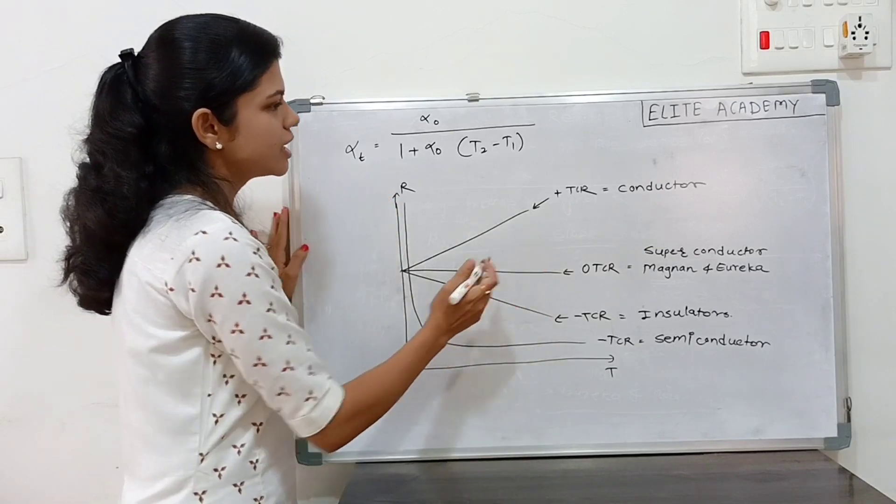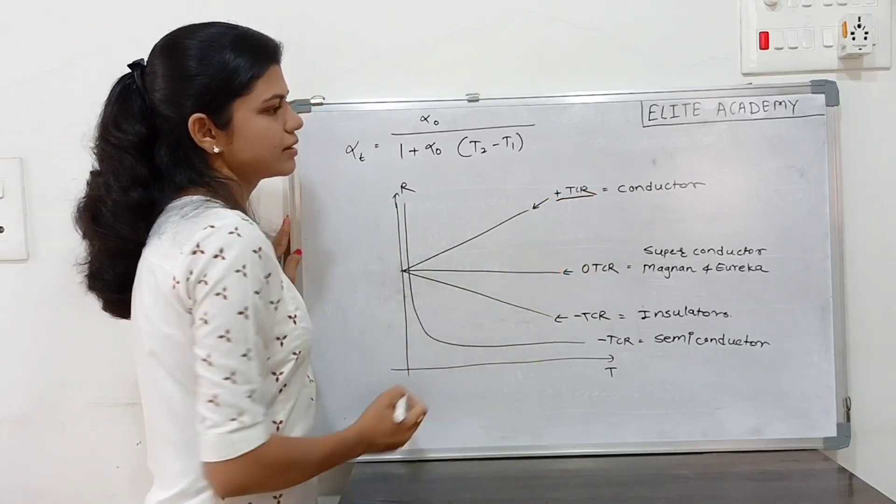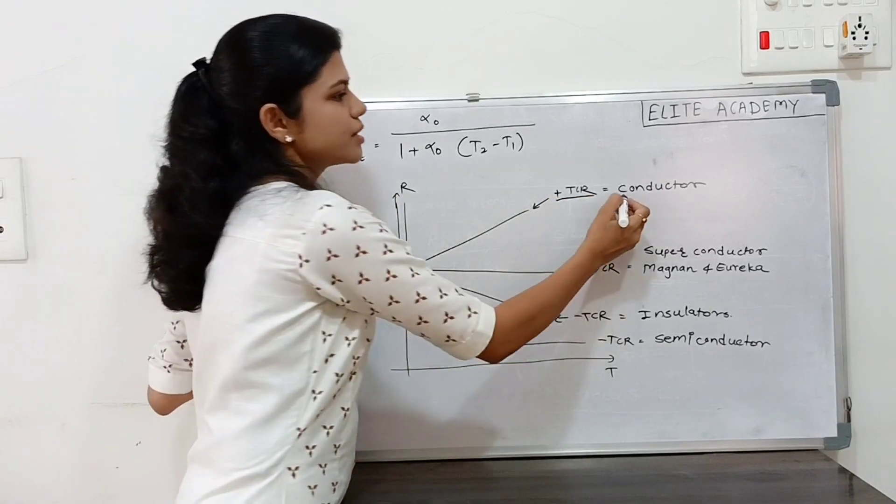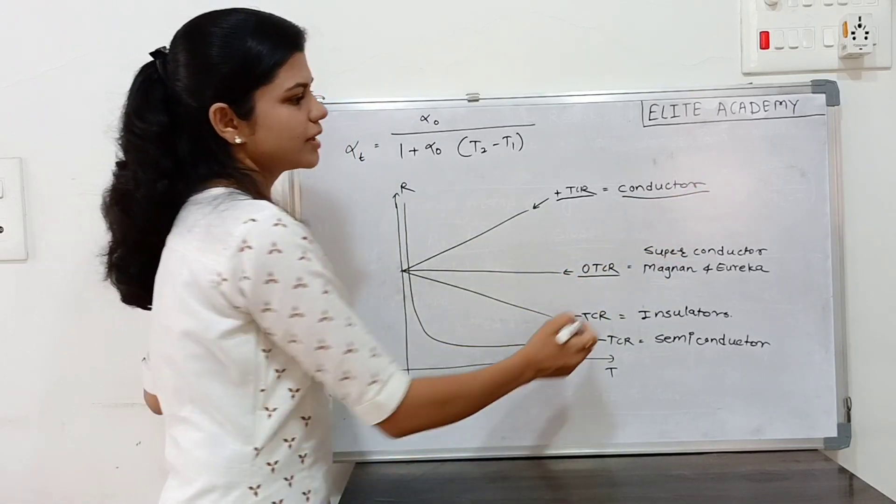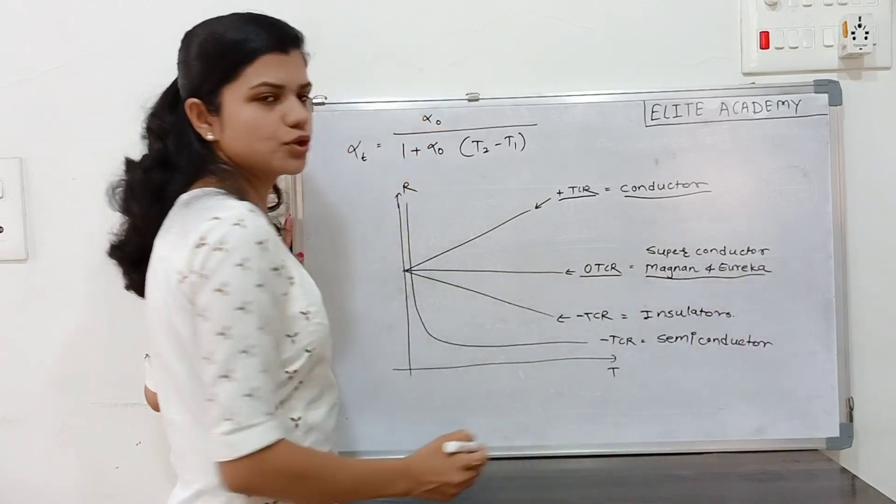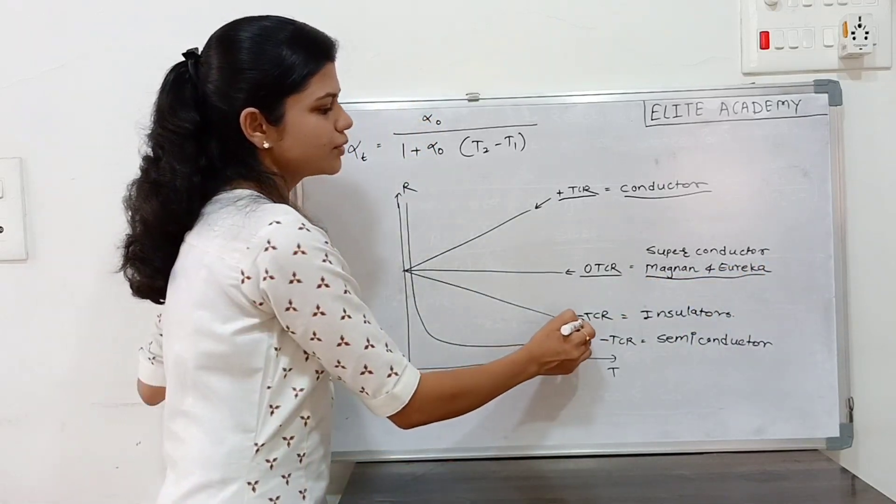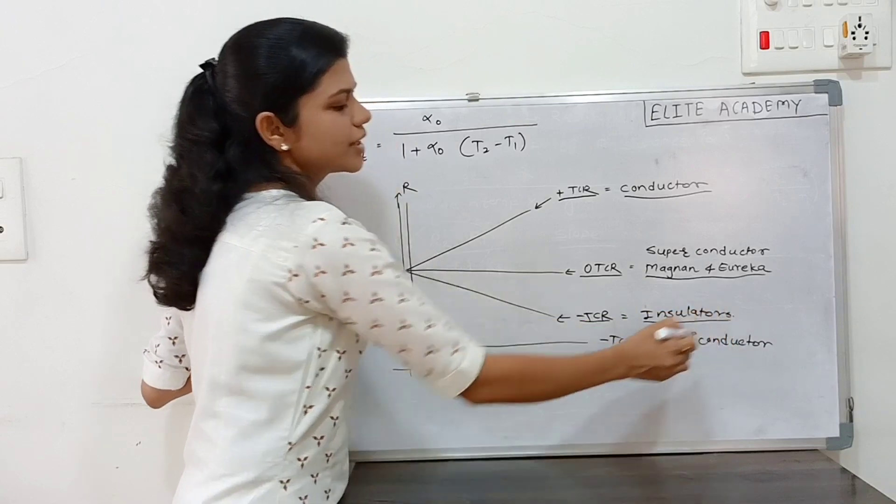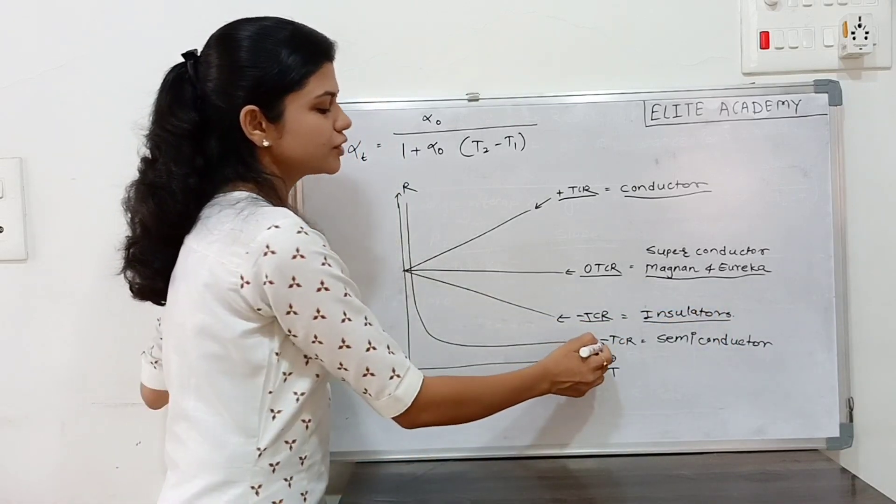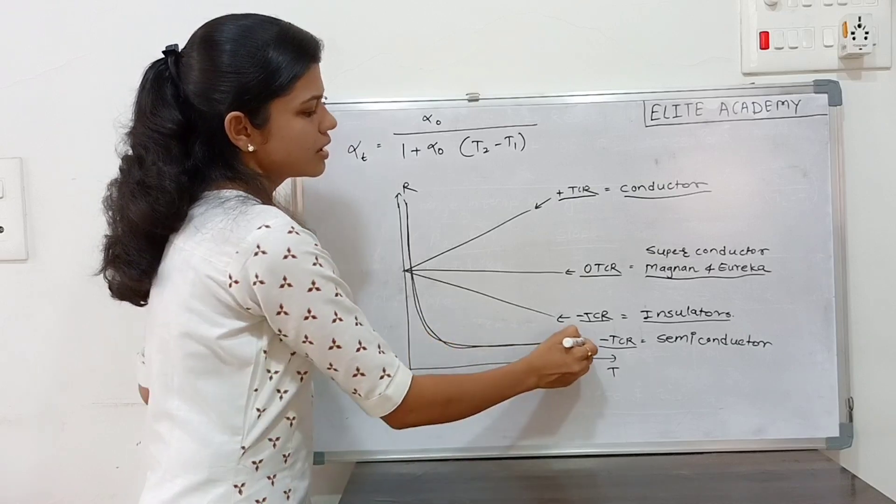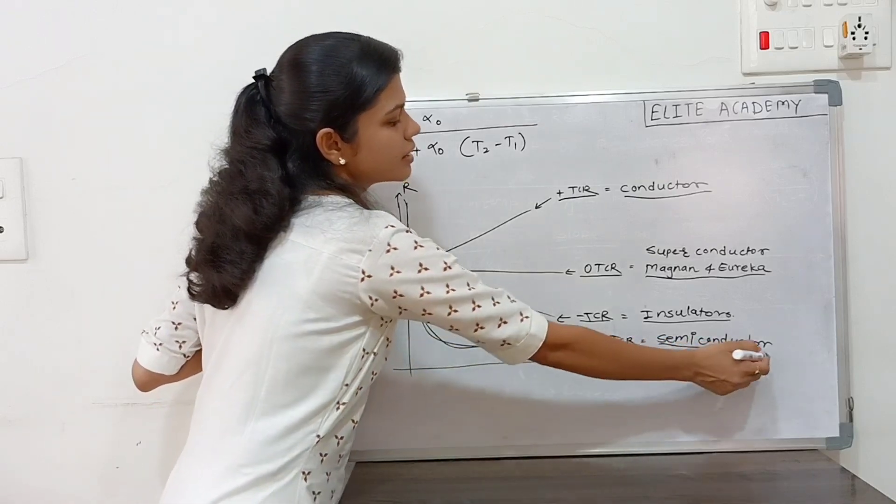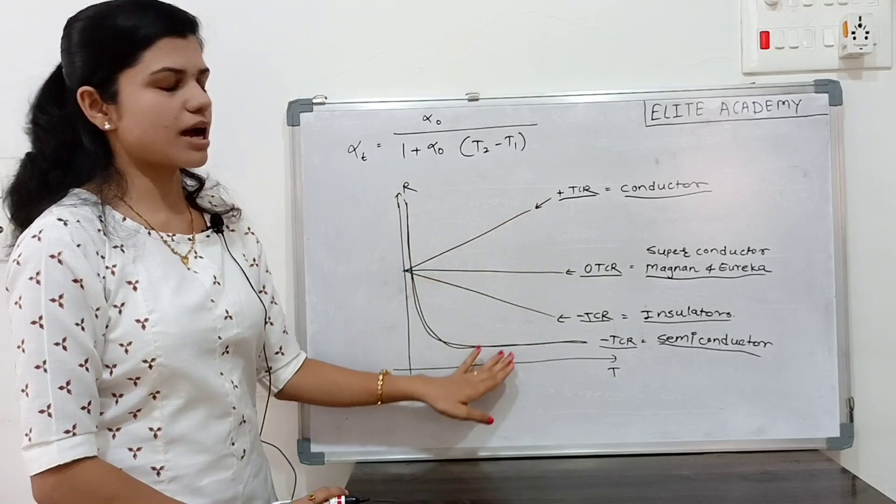Now observe this chart. If the positive TCR is there the material is a conductor. For 0 TCR the materials are Magnol and Eureka. Negative TCR the insulators and also the negative TCR but the graph in this way they are represented the semiconductors. Remember this graph.